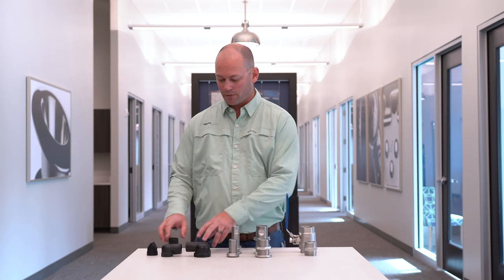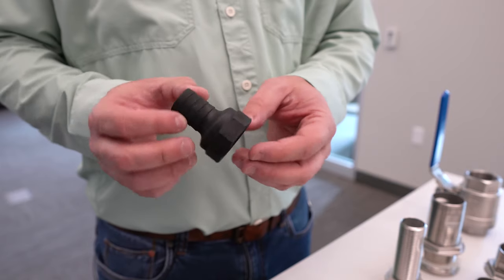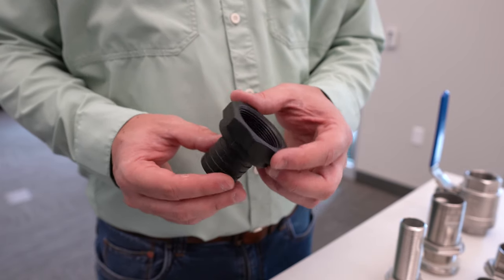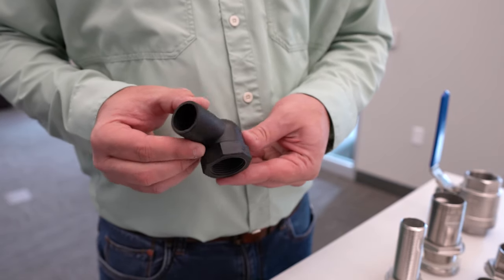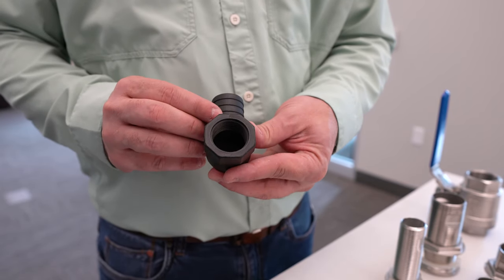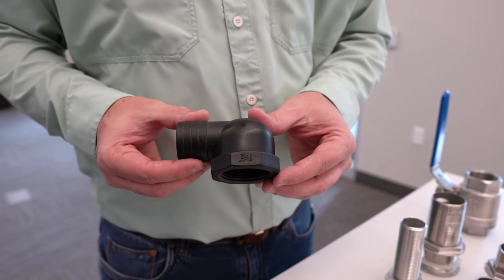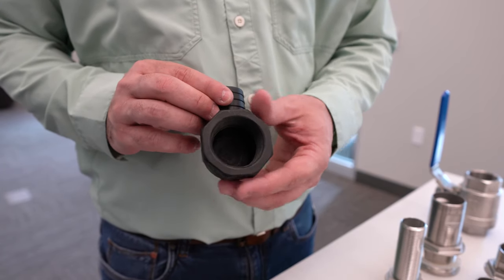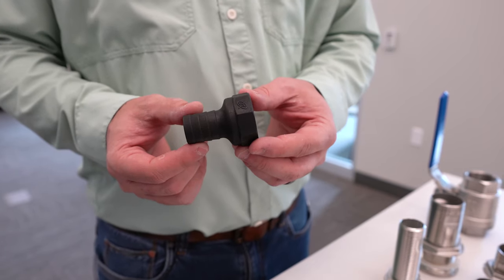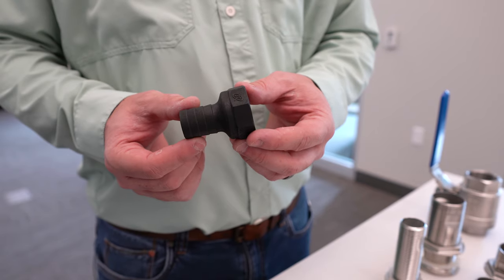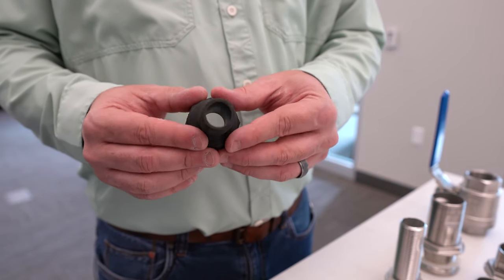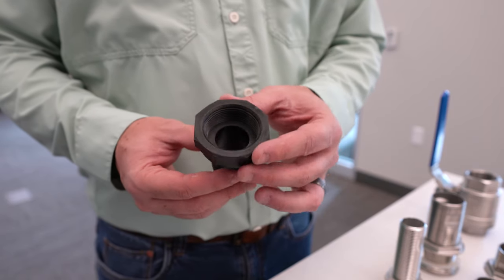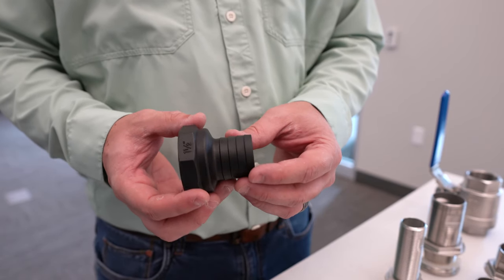With these we also offer nylon adapters. The nylon adapters come in all sorts of different sizes with barbs on them so you can attach them to whatever size hose you have for your particular application. They come in straights and 90s. The ones for the one inch start at five eighths inch adapters and work all the way up to inch and a quarter. The ones for the inch and a half start at inch and a half and end at two inches.